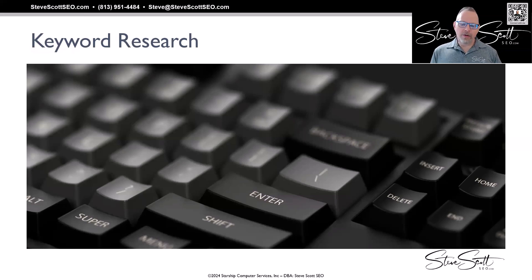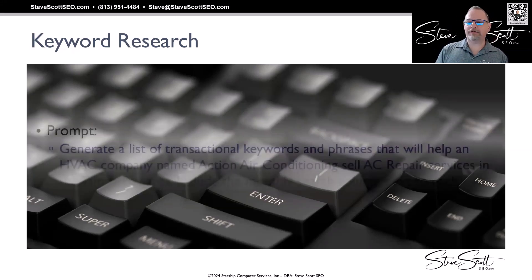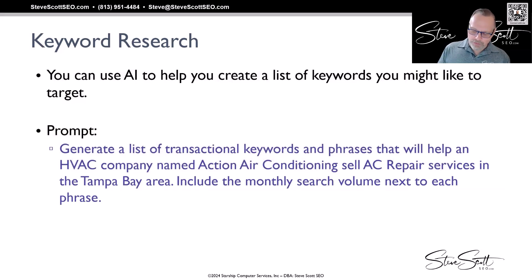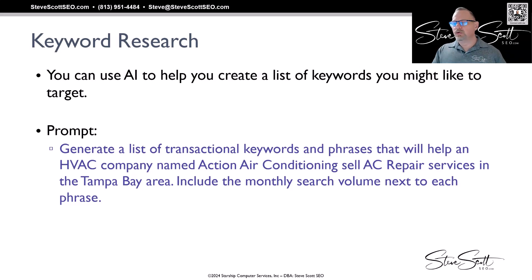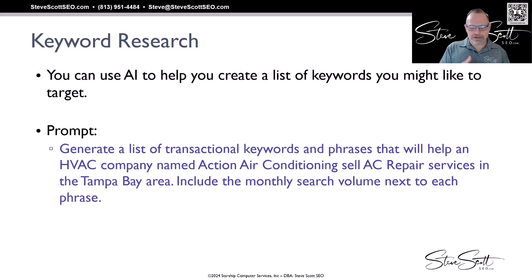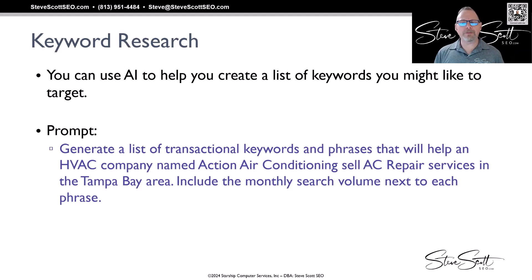Let's first talk about how we can use AI for keyword research, because you always want to get some basic idea about what words and phrases would be valuable to get found for. There are lots of tools out there — I'm not saying don't use tools like SEMrush, Google Keyword Planner, or Ahrefs — where you can research keywords that have value, transactional nature, and monthly search volume. But you can also use AI to help you create a list of keywords you might like to target.